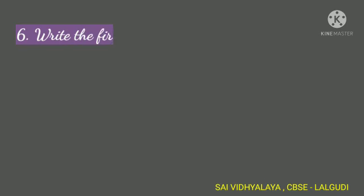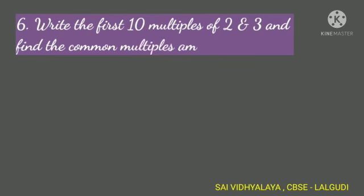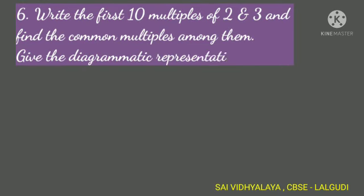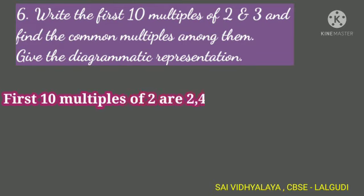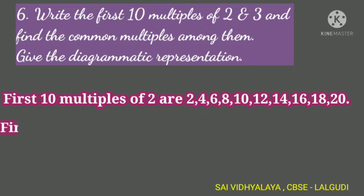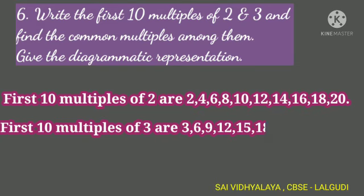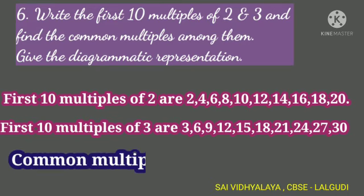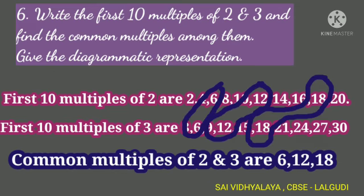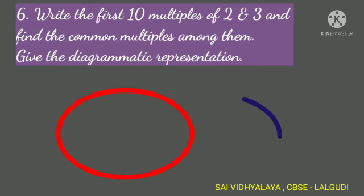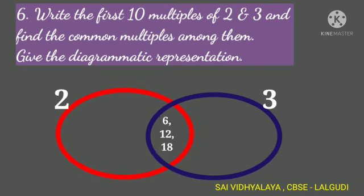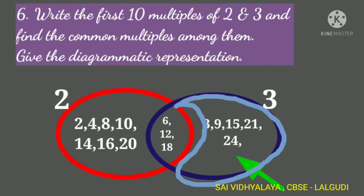Write the first 10 multiples of 2 and 3 and find the common multiples among them and give the diagrammatic representation. First 10 multiples of 2 are 2, 4, 6, 8, 10, 12, 14, 16, 18, 20. First 10 multiples of 3 are 3, 6, 9, 12, 15, 18, 21, 24, 27, 30. Here the common multiples of 2 and 3 are 6, 12, 18. Draw a red and blue color circle. Write the common multiples in the overlapping section, multiples only of 3 on one side, and multiples only of 2 on the other side.